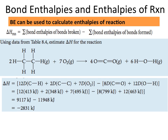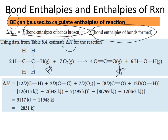Bond enthalpies can be used to calculate enthalpies of reaction. We can calculate delta H by taking the sum of the bond enthalpies of bonds broken (reactants) and subtracting the sum of all bond enthalpies of bonds formed (products). To apply this to a specific reaction — the combustion of ethane to give CO2 and H2O — the first thing we do is look at how many bonds are being broken, what kind they are, and what kind of bonds are being formed.